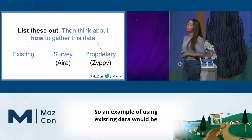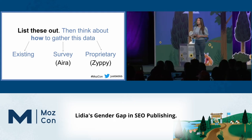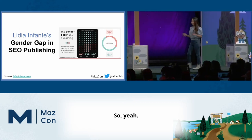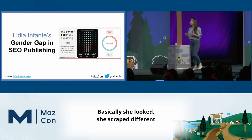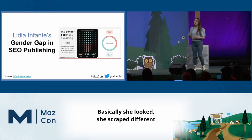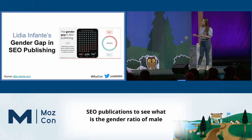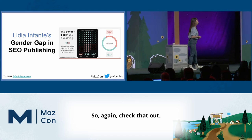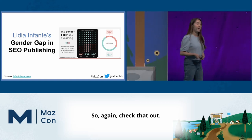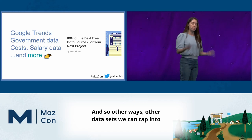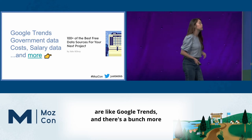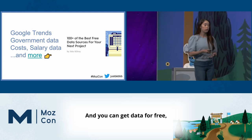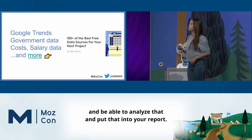An example of using existing data would be Lydia's gender gap in SEO publishing. Basically, she scraped different SEO publications to see what is the gender ratio of male to female writers. And Moz did really well in this one — make sure to check that out. Other data sets we can tap into include Google Trends, and there are a bunch more. You can get data for free, analyze it, and put that into your report.